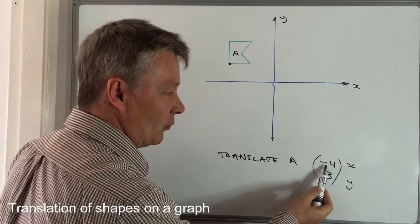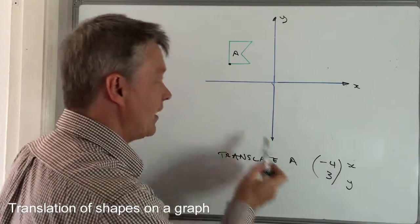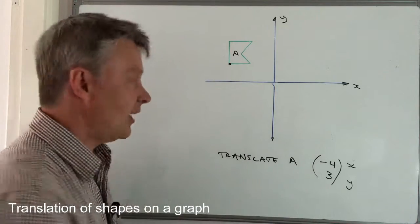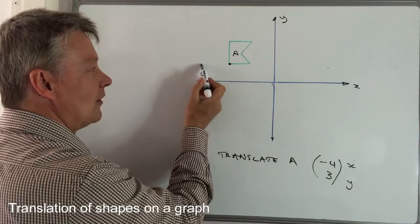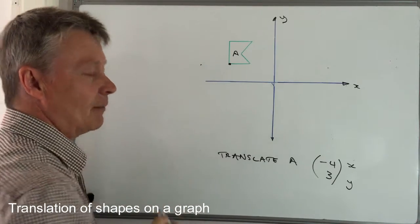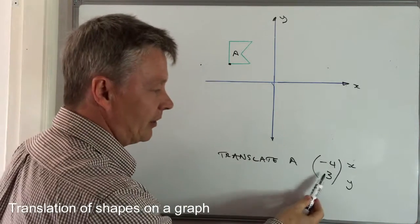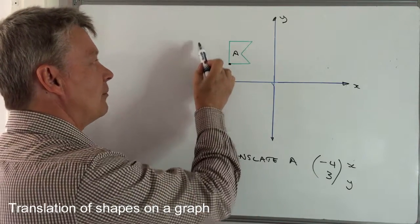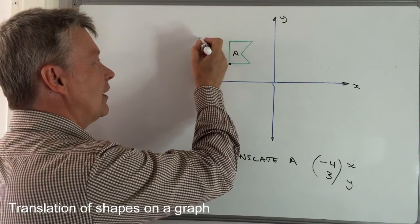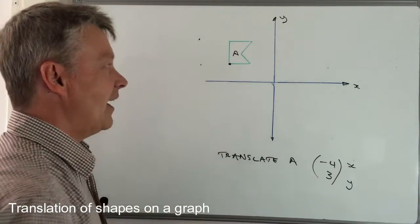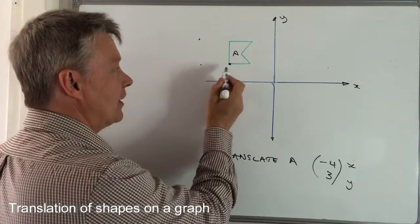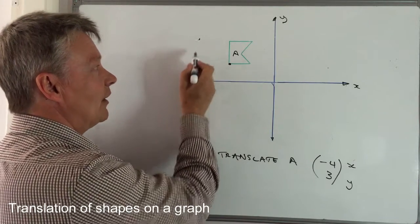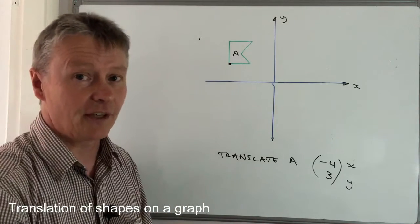We're going to move along the x-axis just this point by minus four. I'm going to move it along minus four which will take me to about there, and then I'm going to move it up three, so it's going to go up three to something like about there. So this point has gone minus four in this direction and then three in this direction.